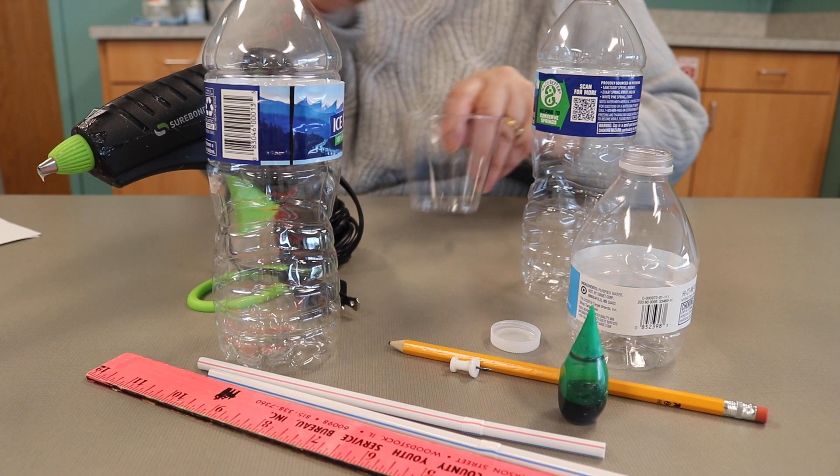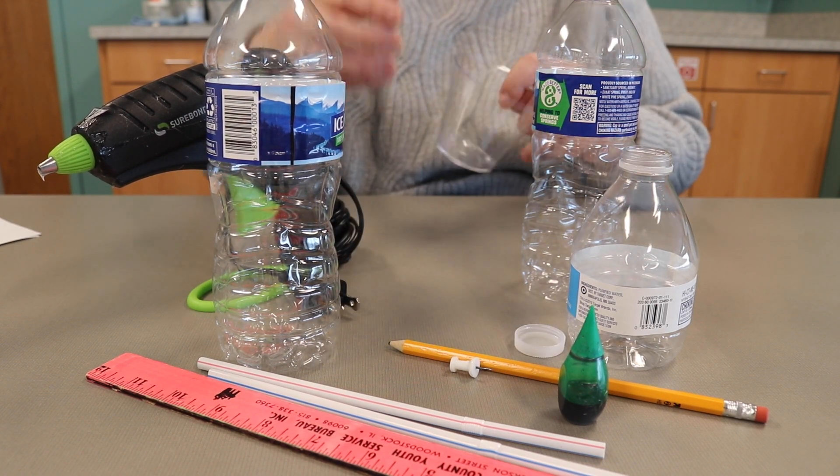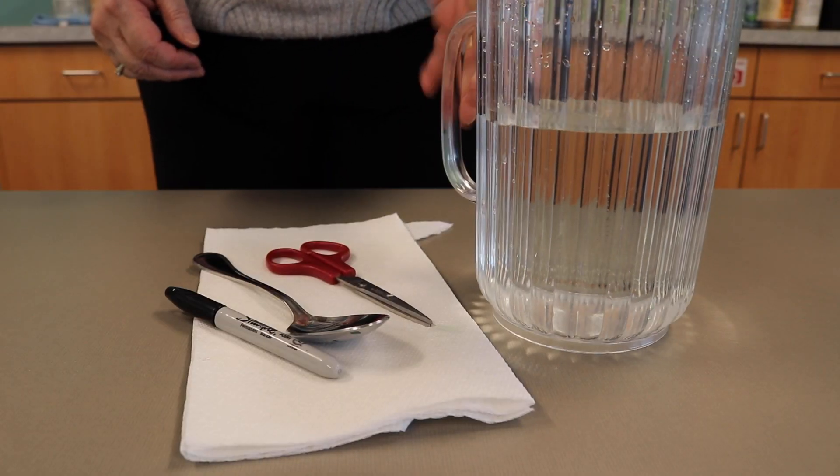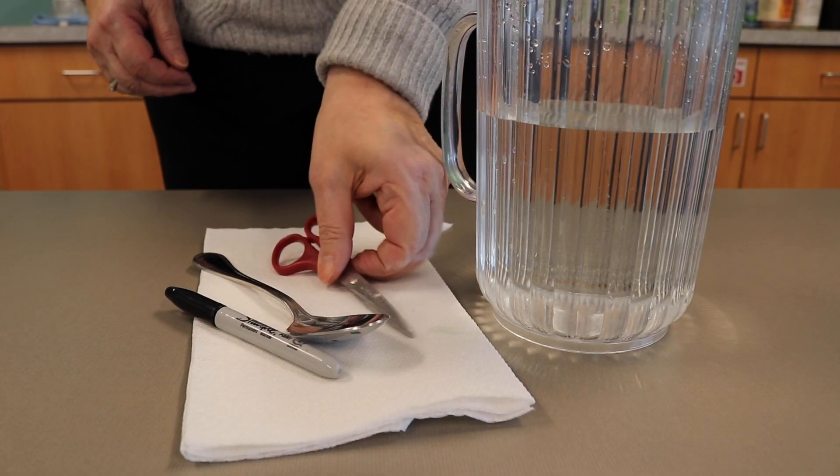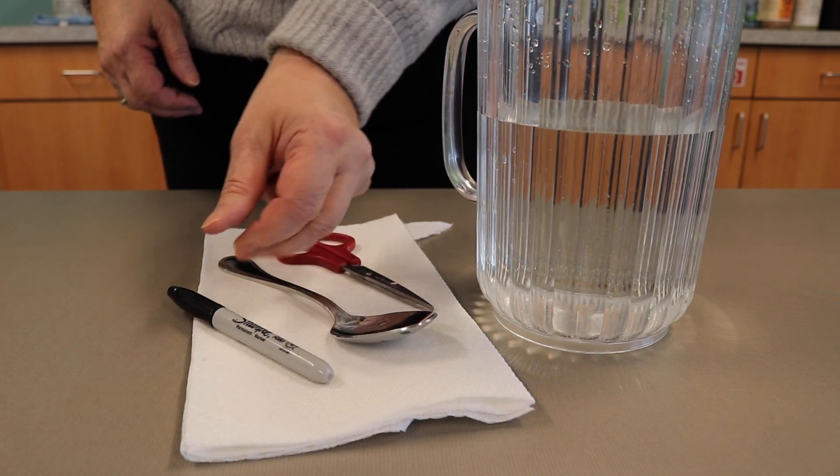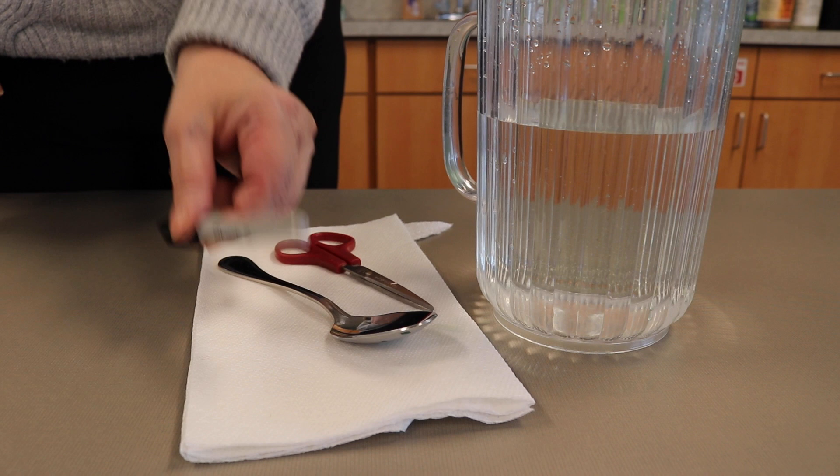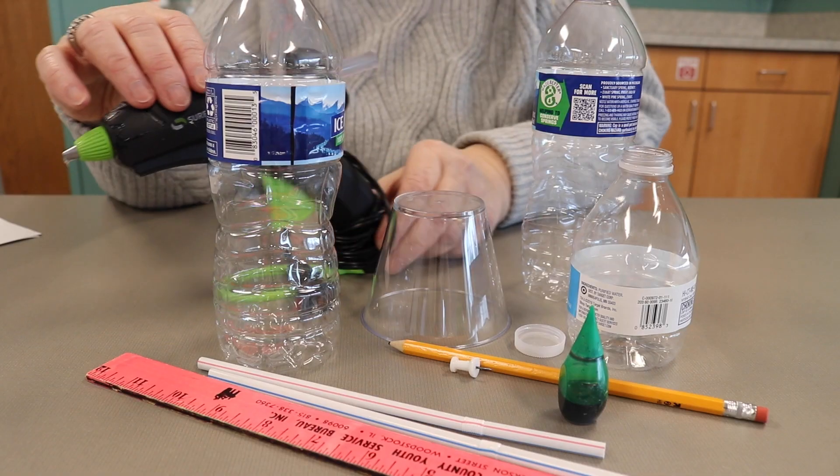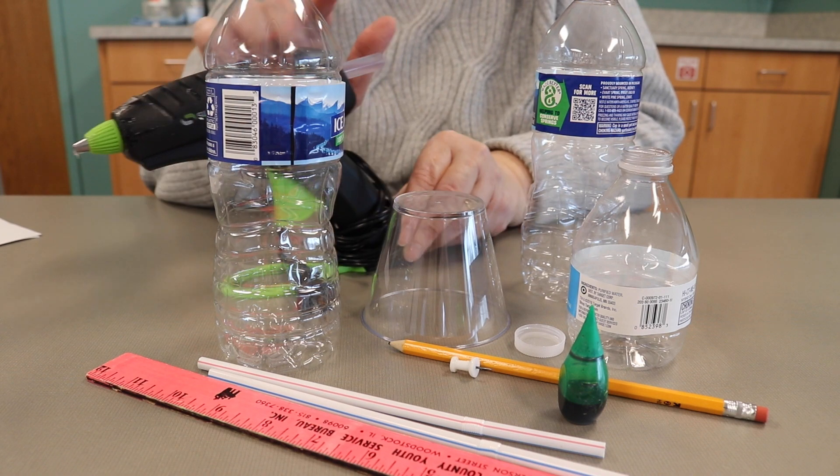You need one bottle cap to fit the bottles and a plastic cup, a pitcher filled with water which you'll add food coloring to, a pair of scissors, a spoon to stir the water and food coloring, a sharpie, a paper towel, and the last thing you'll need is a glue gun and glue.